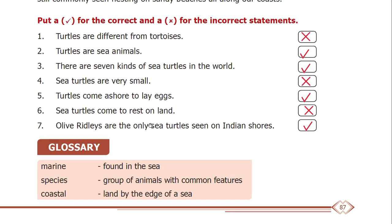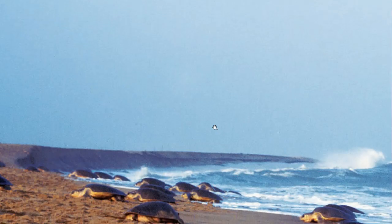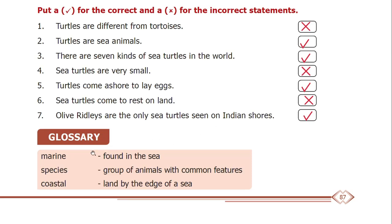Olive ridley sea turtles can be seen on Indian shores. Species is a group of animals with common features — it is a group of animals that share the same features and characters.